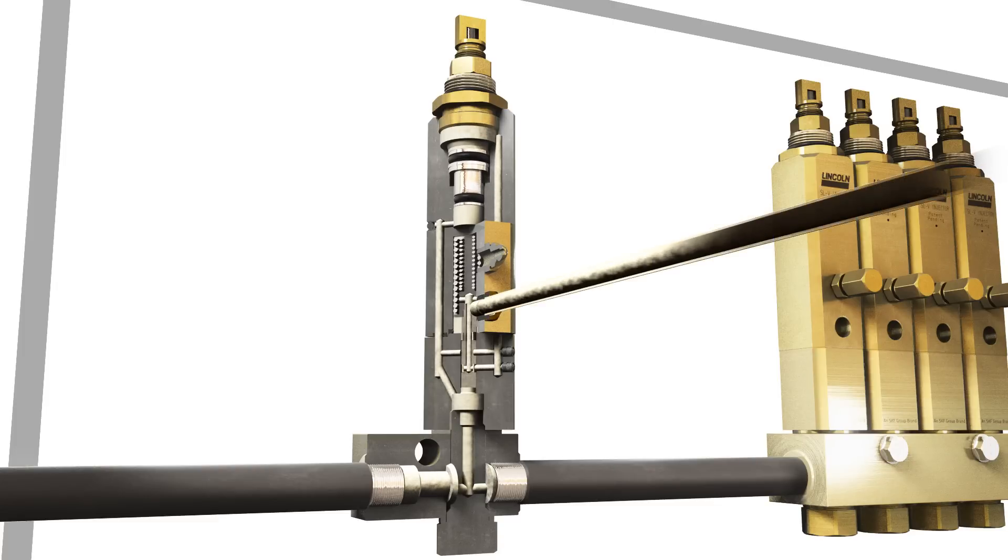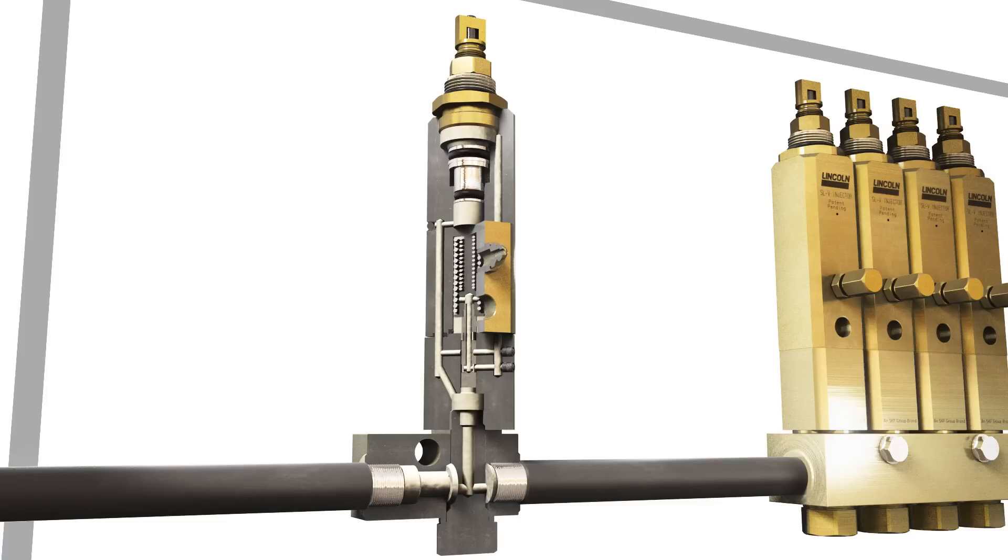The measuring piston will dispense lubricant until the indicator pin hits the stop in the adjusting screw.